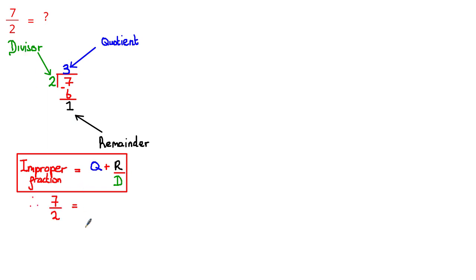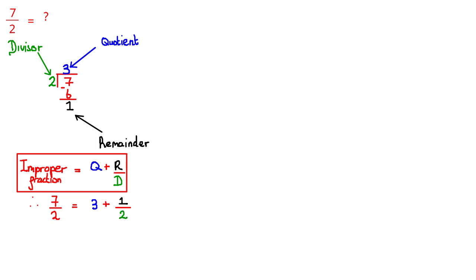The formula is that an improper fraction is equal to Q (the quotient) plus R (the remainder) over D (the divisor). Therefore, 7 over 2 is equal to Q, the quotient — which is 3 in this case — plus R, the remainder, which is 1, divided by the divisor, which is 2.